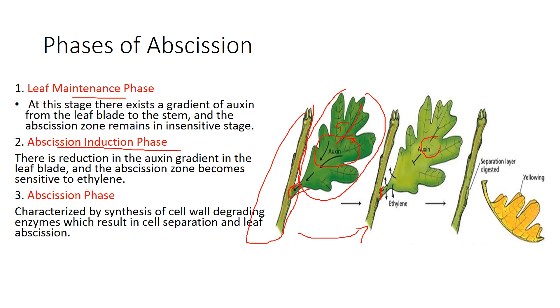After the formation of this abscission layer, it will start synthesizing cell wall degrading enzymes that will degrade the cell wall layer and separate the two cells. So this separation happens in the third phase that is called the abscission phase. And ultimately the leaf will fall or separate from the stem portion.